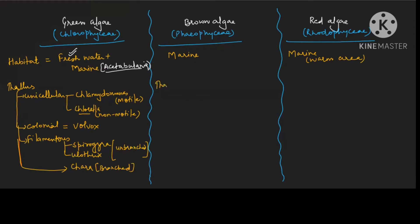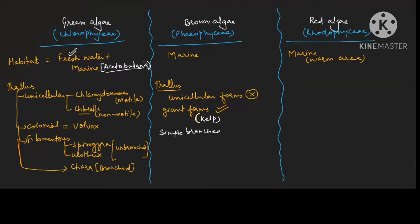Now see the thallus organization for brown algae. In brown algae, unicellular forms are absent — they don't have unicellular forms. Only giant forms are present, and these giant forms are known as kelp. Kelp can be simple branched to extensively branched. For red algae, thallus organization ranges from unicellular to multicellular forms.